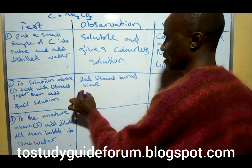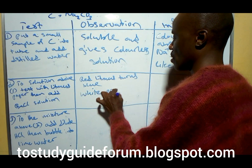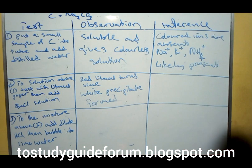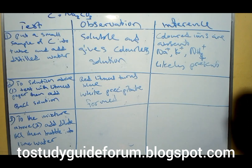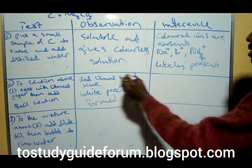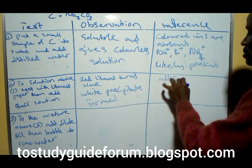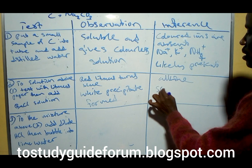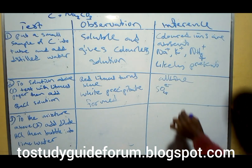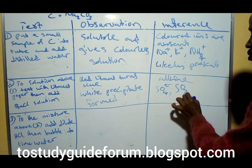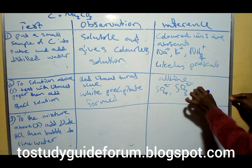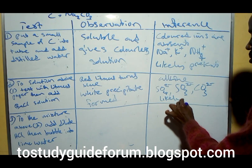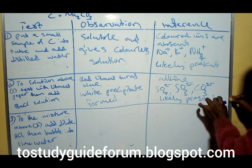On adding barium chloride, we have white precipitates formed. This means that the solution is alkaline or basic. The white precipitates formed indicate that the sulfate ion is likely present, and the carbonate ion is also likely present.